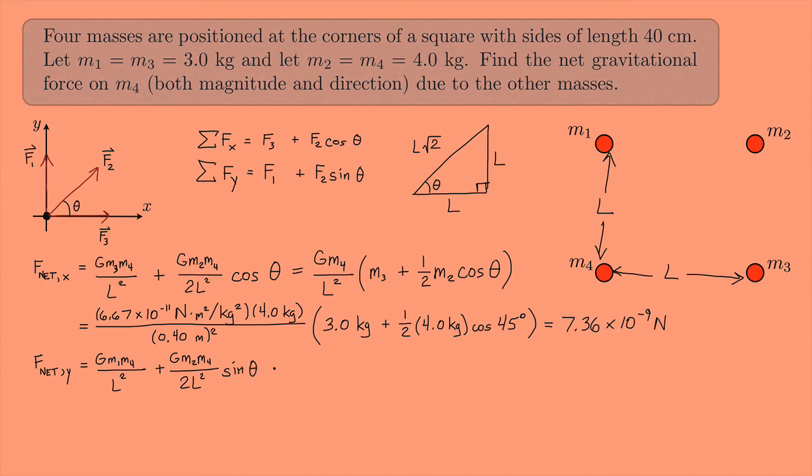And again, I can simplify this a little bit. I have a common factor of G M4 over L squared. And what's left over, I have an M1 plus 1 half M2 sine theta.